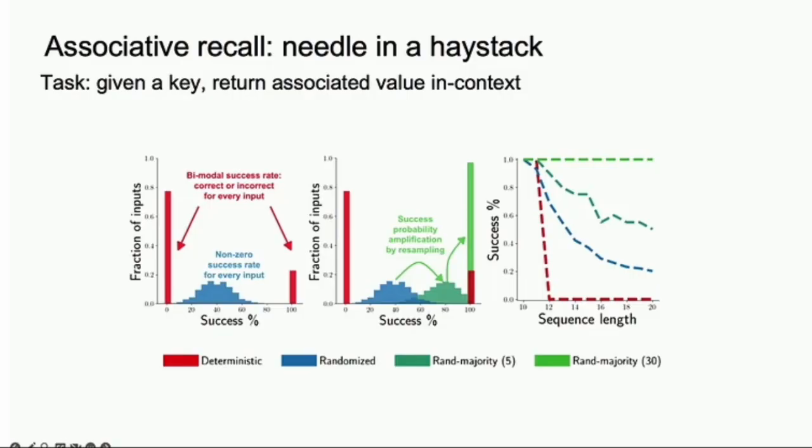You can also see it in the following. We have a fixed sequence length. With deterministic, if you have 10 associations you can learn, then it dramatically decays. With randomized, it decays in a much smoother way. If you're allowing yourself to do majority voting, you can learn even much more information than you could previously.